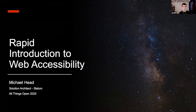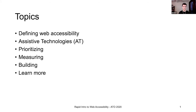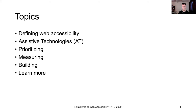Since this is a short session, we'll jump right in. Here's what we'll be talking about today: we'll define web accessibility, go over some assistive technologies, and then we'll discuss prioritizing, measuring, and building accessible web interfaces. I'll have my contact information at the end and it's in the chat if you want to get in touch to ask questions later.